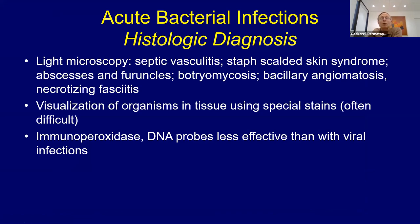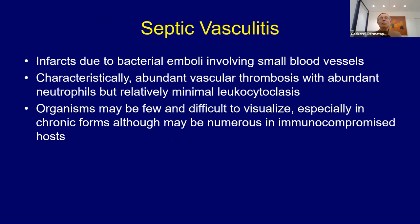Moving from viruses to bacteria: there are two ways bacteria can involve the skin — acute bacterial infections and more chronic bacterial infections. Light microscopy can help you see organisms in tissue, though it can be difficult in some cases. Other techniques include immunoperoxidase staining, DNA probes, and PCR, which are generally less commonly used than with viruses but are available.